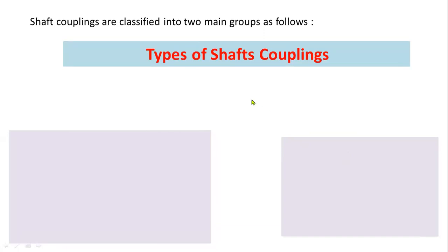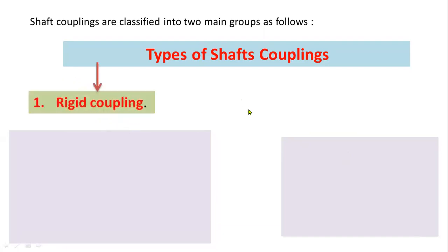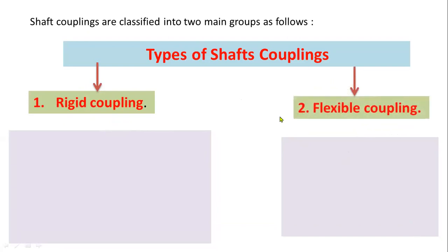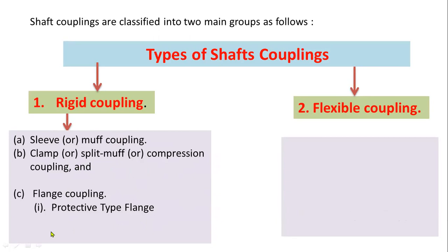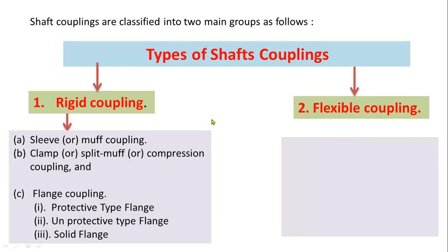Shaft couplings are classified into two main groups: rigid coupling and flexible coupling. Under rigid couplings, the third type is flange coupling, which is further subdivided into protective type flange coupling, unprotective type flange coupling, and solid flange or marine type flange coupling. These are all rigid couplings.